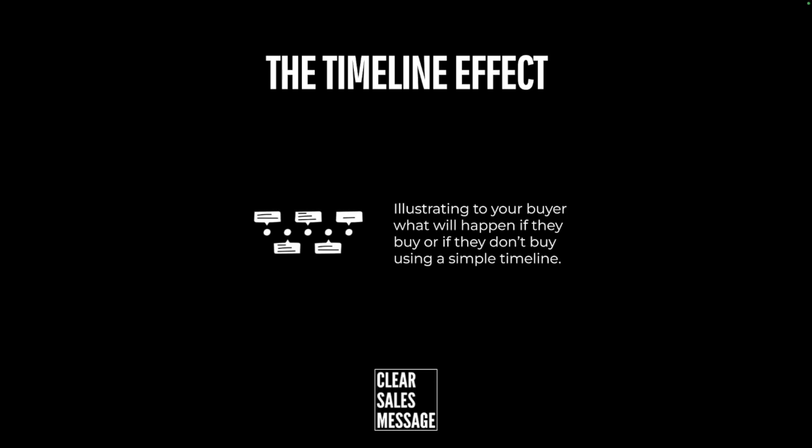The second one is a timeline of the project and working with you — so when you work with us, this is what we do step by step, here is a project, here is how it works. And the third one is a timeline of how your industry has changed over time or is changing over time — this is where we get into the notion of web 1.0, web 2.0, clear sales message 3.0, etc.